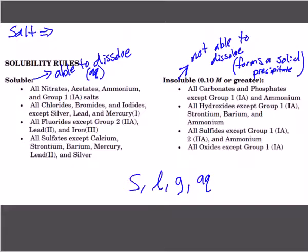NaCl is an example of a salt, but that's not the definition. A salt is any ionic compound. Sodium chloride is the typical example — the poster child, the one we use the most, table salt. Any ionic compound. So any time you see a group 1 element in a compound, you know right away it's aqueous — it's soluble.